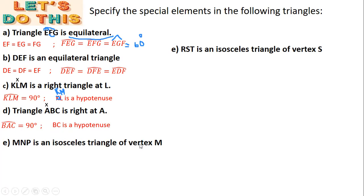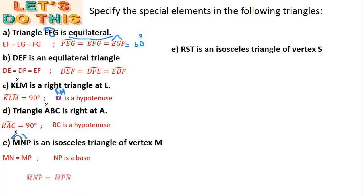Triangle MNP is an isosceles triangle of vertex M. An isosceles triangle has two equal sides and two equal angles. The special vertex is M, so I mark it with an X. The two equal sides are issued from M: MN = MP. The base is NP. The two equal angles are at vertices N and P, so angle MNP equals angle MPN.